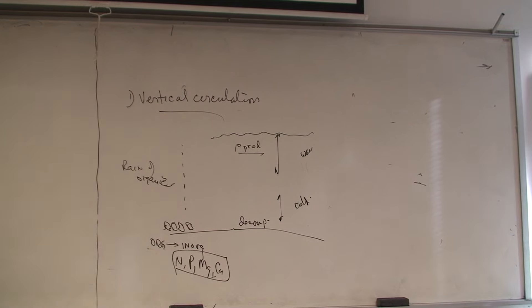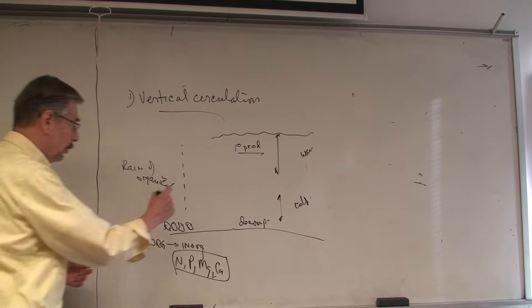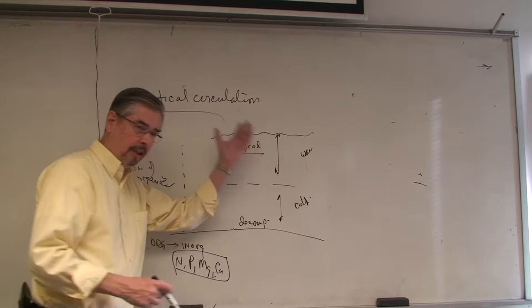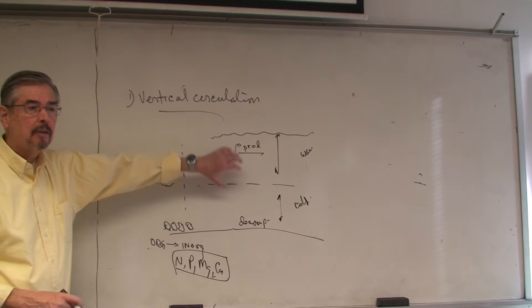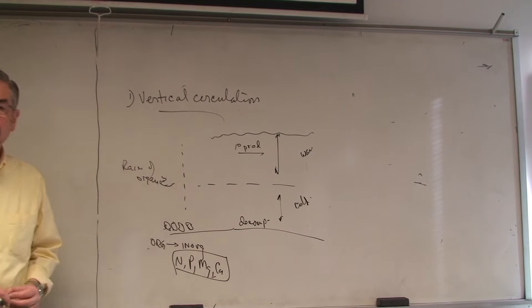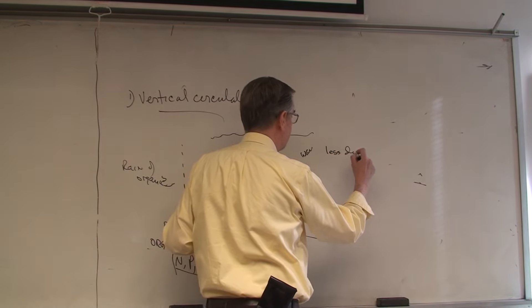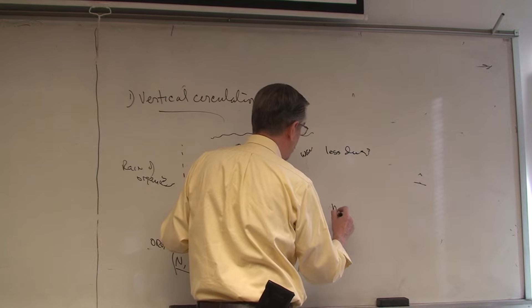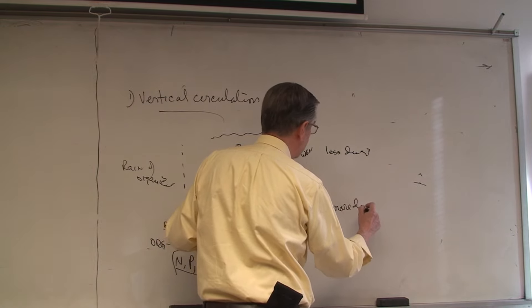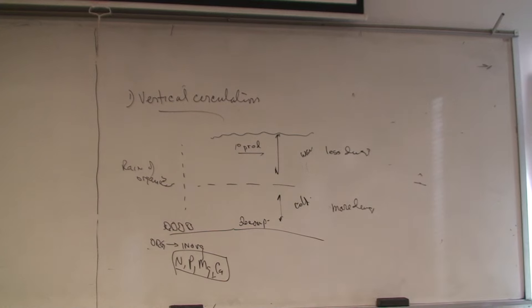Anything that falls down from the top — fish feces, dead phytoplankton, whatever dies or produces waste — falls to the bottom and bacteria decompose it. They're taking organic compounds and turning them into inorganic compounds like nitrogen, phosphorus, magnesium, and calcium — all the inorganic compounds needed by plants for photosynthesis.